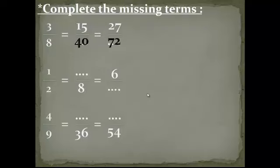The king fraction: 1 over 2 equals space over 8. 2 becomes 8, so we multiply by 4: 2 by 4 equals 8, so 1 by 4 equals 4. The king fraction again is 1 over 2. 1 becomes 6, so we multiply by 6: 1 by 6 equals 6, so 2 by 6 equals 12.